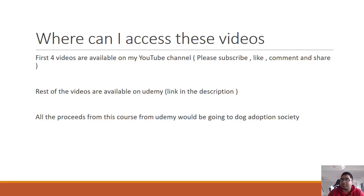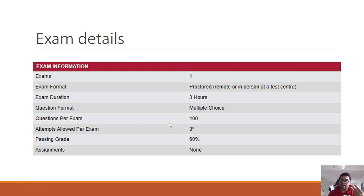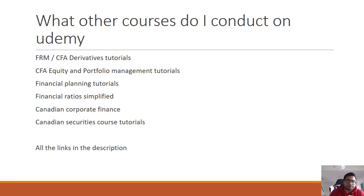The IFIC exam is a multiple-choice, three-hour exam with 100 questions. When you register, you get one attempt, but you can make two additional attempts if needed. The passing grade is 60% and there are no assignments — you simply clear the exam with 60% and receive your IFIC license.